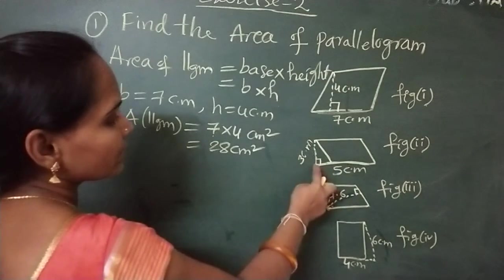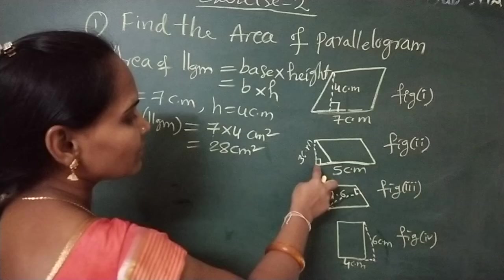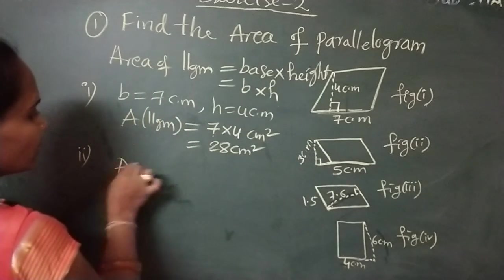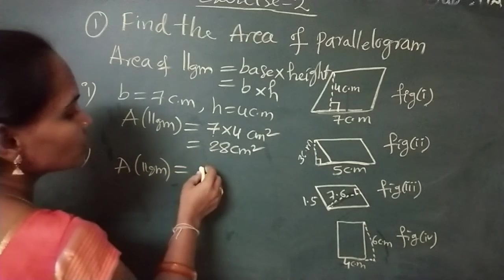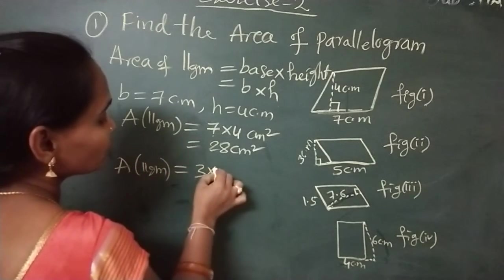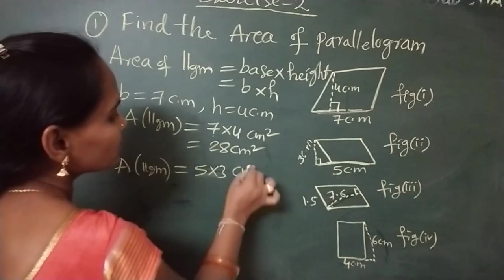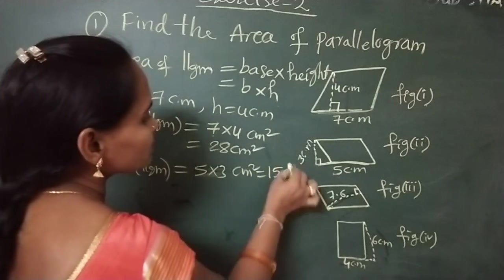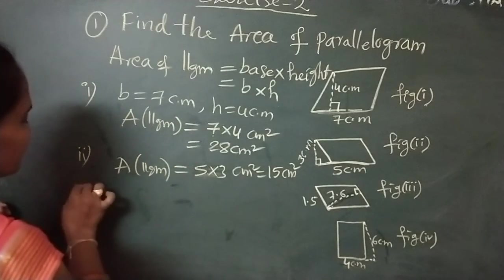From figure 2, base into height - here 5 is the base and 3 is the height of this figure 2 parallelogram. Directly I am substituting: area of parallelogram in figure 2, base into height means 3 into 5, or otherwise you can write 5 into 3 centimeters square, which will give 5 threes is 15 centimeters square.